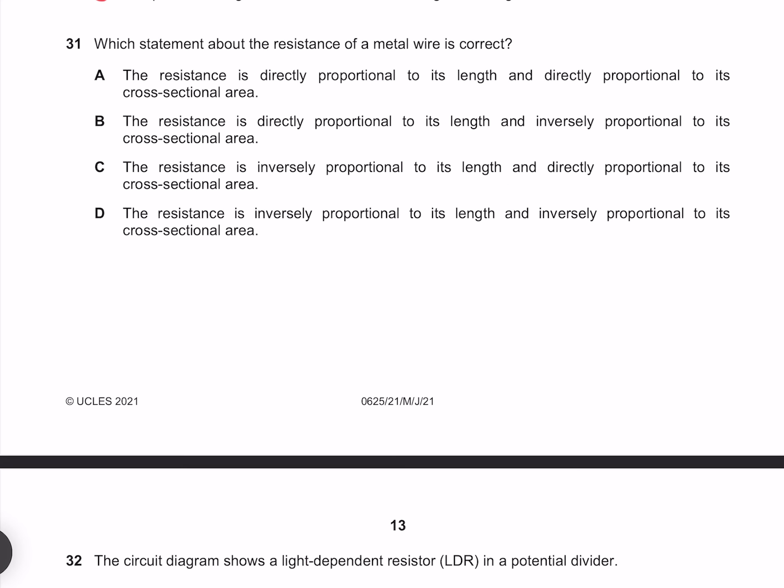Which statement about the resistance of a metal wire is correct? It is directly proportional to the length but is not directly proportional to the cross sectional area. It is in fact inversely proportional. Our answer must therefore be B.